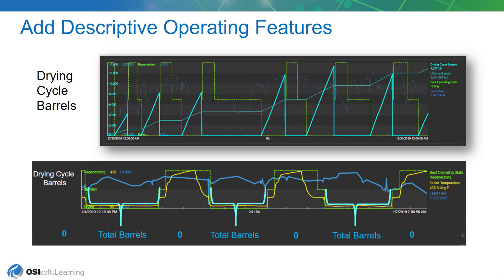Once we have the dryer states defined, we can calculate the other two descriptive operating features. The first one will be the drying cycle barrels — you can see a trend of that value in the PI Vision display as the light blue trace. It's a sawtooth trend where we're accumulating the barrels during drying cycles. It only adds to the total when the dryer is in drying mode, and then it resets to zero at the start of each regeneration cycle.